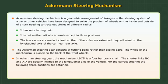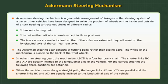In Ackerman steering gear, the mechanism ABCD is a four-bar crank chain. The shorter links BC and AD are equally inclined to the longitudinal axis of the vehicle. For correct steering, the following three positions are obtained: when the vehicle moves along a straight path, the longer links AB and CD are parallel and the shorter links BC and AD are equally inclined to the longitudinal axis of the vehicle.